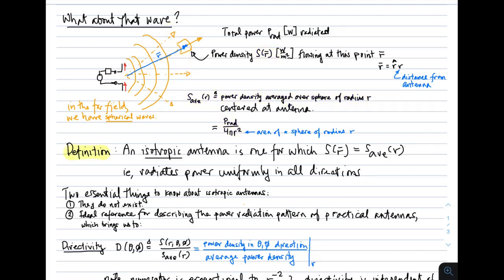An isotropic antenna is one for which the power density at any point on a sphere of radius R is equal to the average power density at that distance. In other words, an isotropic antenna radiates power uniformly in all directions. There are two essential things to know about isotropic antennas. First, they do not exist — there is no such thing as an antenna which radiates power uniformly in all directions. Second, an isotropic antenna is an ideal reference for describing the power radiation pattern of a practical antenna — a baseline against which we can describe how other antennas distribute their radiated power.